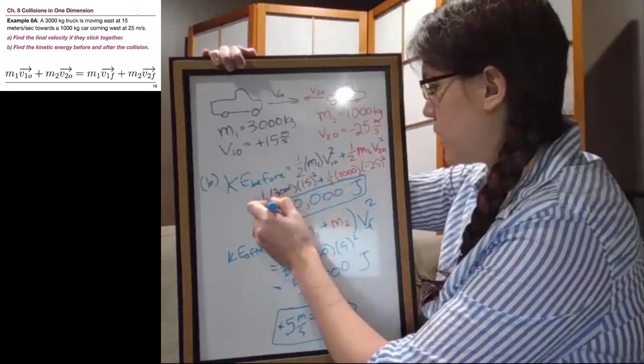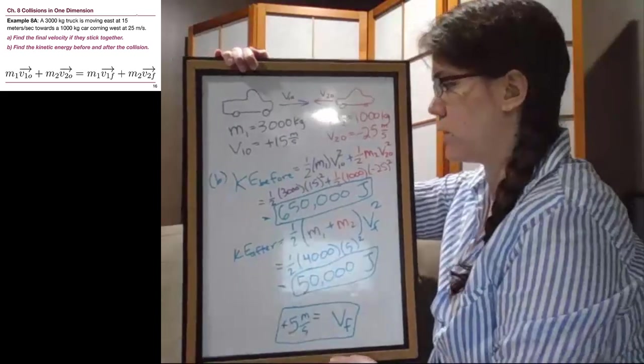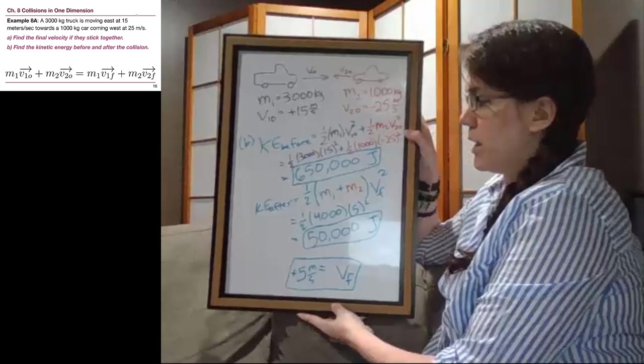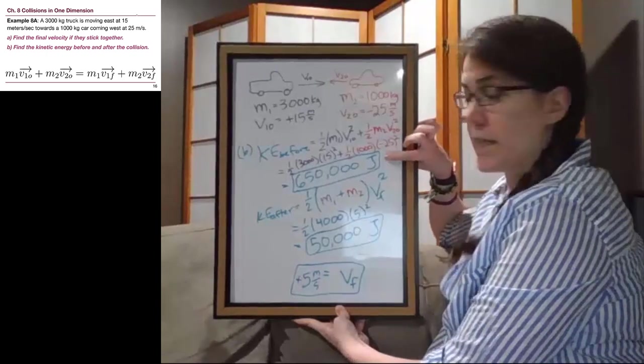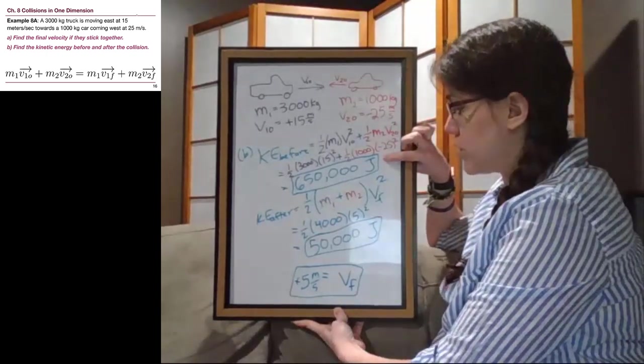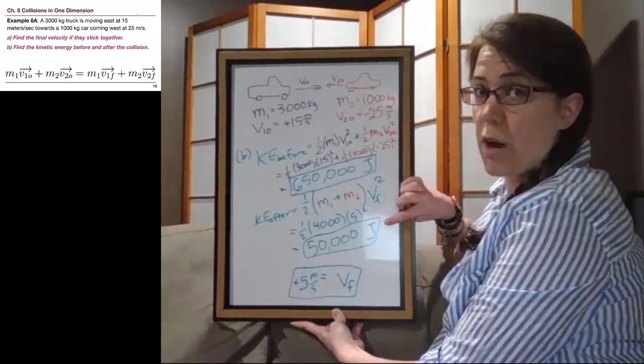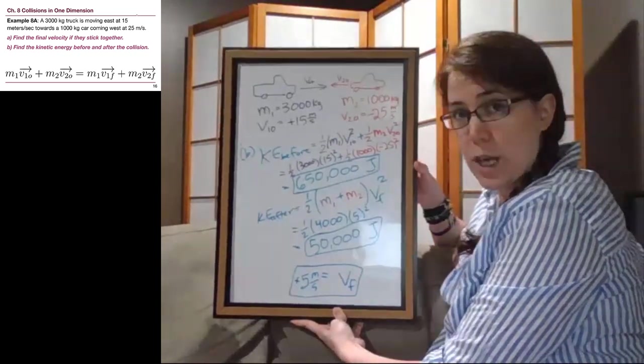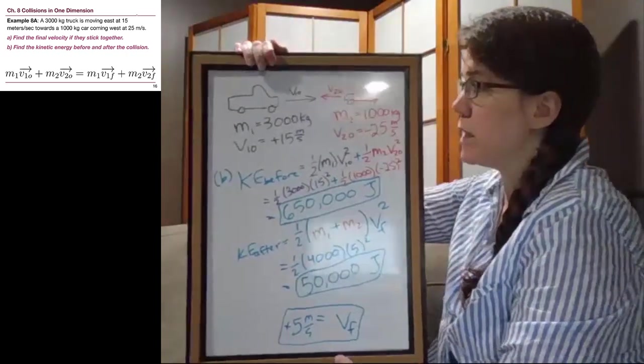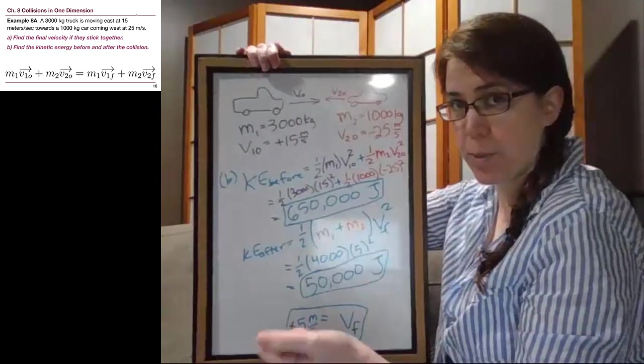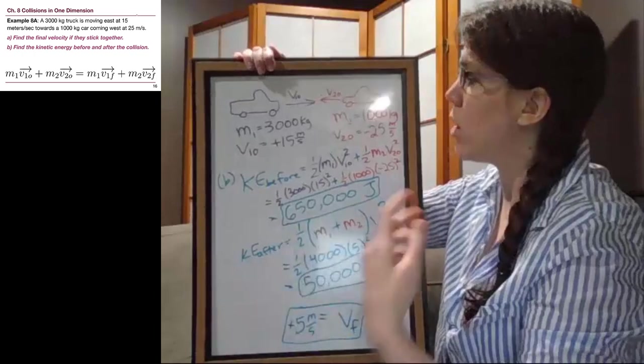So this answers the question, but it's worth taking a minute to discuss what that means. The trackable kinetic energy before they hit each other was 650,000 joules, and after they stuck together it's 50,000 joules. So where did that extra energy go? If we think about this situation, there was a lot of misshapen metal that forces had to crush, lots of sound, all of this kind of stuff.